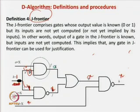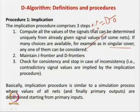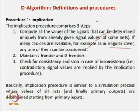The implication procedure finds as many signal values as possible that are uniquely determined. If multiple choices are available — for example, for an AND gate with output 0, inputs can be x,0 or 0,x — any one choice can be taken. After implication, we identify the J frontiers and D frontiers. If there is inconsistency — for example, a net needs to be 1 but implication gives it 0 — we must stop and report inconsistency.